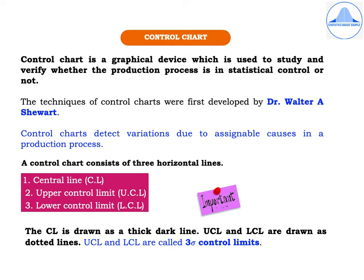A control chart consists of three horizontal lines: the central line, upper control limit, and lower control limit, which are abbreviated as CL, UCL, and LCL respectively. The CL is drawn as a thick dark line, UCL and LCL are drawn as dotted lines, and UCL and LCL are called the 3 sigma control limits.